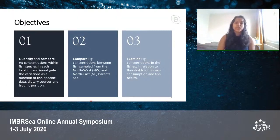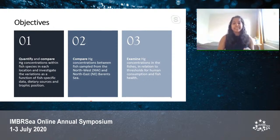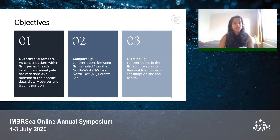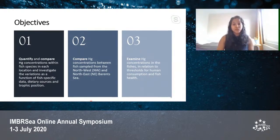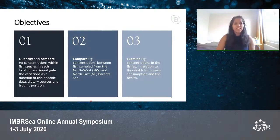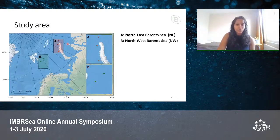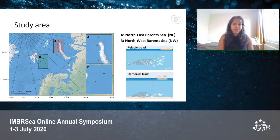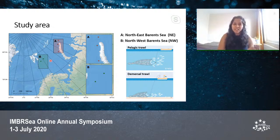Our objectives were threefold. The first was to quantify and compare mercury concentrations within fish species in each location and look at variations as a function of several biological and ecological factors. The second was to compare mercury concentrations between fish sampled from the Northwest and Northeast Barents Sea, where regional differences were expected owing to differences in water mass characteristics and proximity to industrialized areas. Our study area was the Barents Sea, where fish were sampled from both regions using a pelagic and demersal trawl. Fish were sampled quite randomly from the Northeast, while they were sampled with a fixed size class in mind from the Northwest.